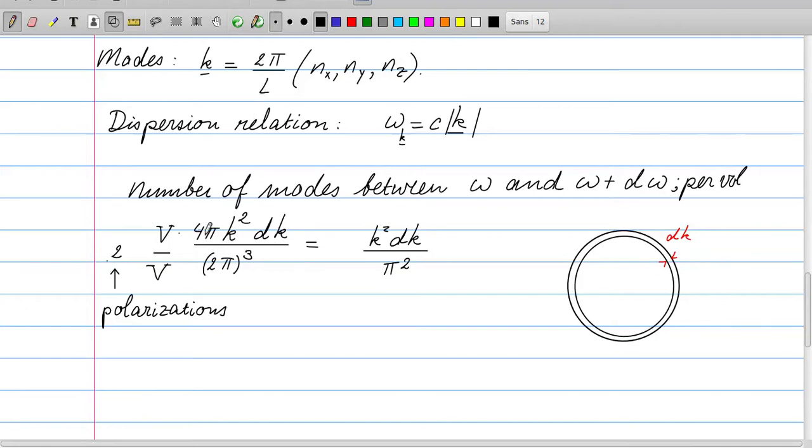And we can immediately divide the volume of the spherical shell, which is 4pi k squared, which is the surface times the thickness dk. We divide that by the volume per k point, 2pi to the third. And then we have a V. We want to have, in the end, the number of modes between omega and omega d-omega. And we want to have that per volume, so we divide by another factor of V. And then we have a factor of 2 due to the two polarizations of the light. And if we evaluate everything, we get k squared dk over pi squared. So that's the number of modes between omega and omega plus d-omega.